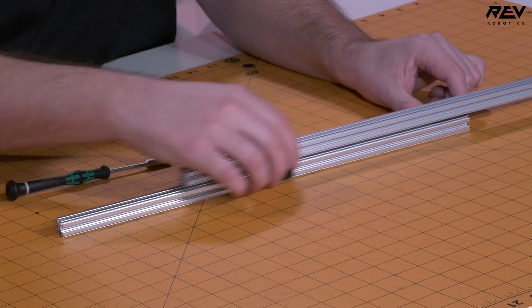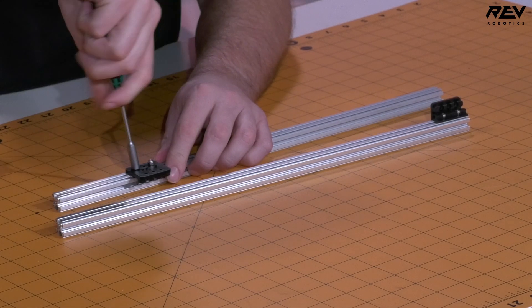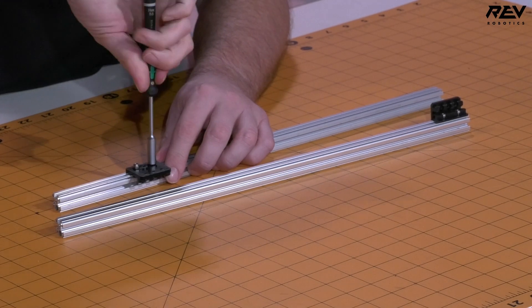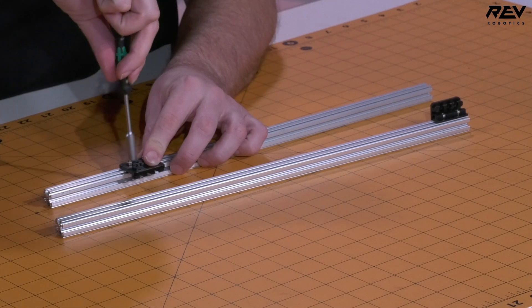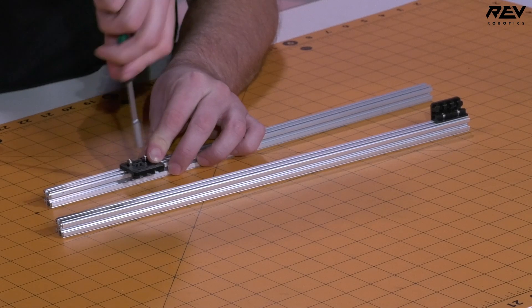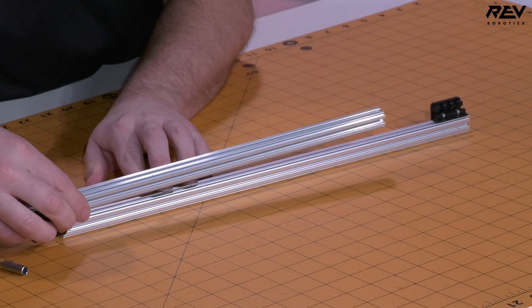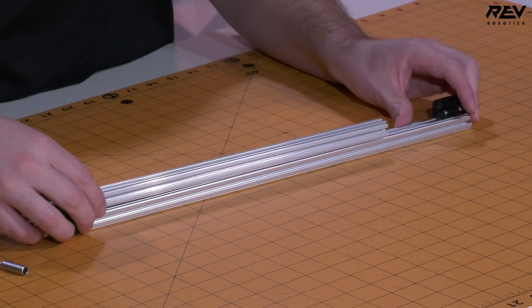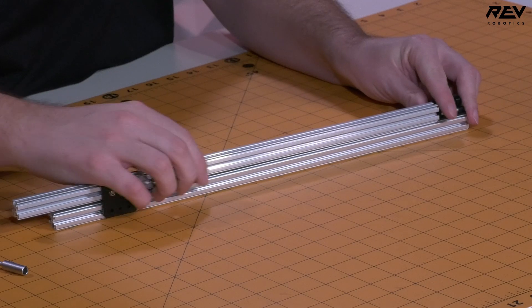But if we were to take this we could rotate this around and then see if there's another end where it wouldn't be nearly as free as this previous section is. You can sit here and do a test and check to make sure that the side that you're choosing as you're going through your assembly process is going to be the right one.